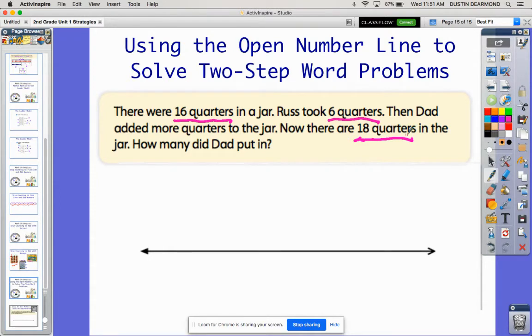So again, hopefully you can picture that in your head. You can picture the jar. You can picture Russ taking some out, six of them to be exact. And then his dad throwing some more in there. And now if we counted it, it's going to be 18. So open your eyes, and let's look at my open number line.